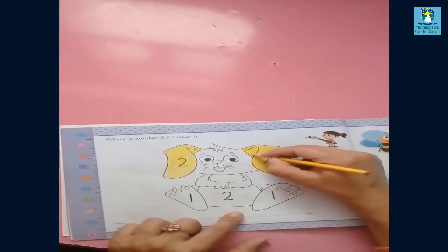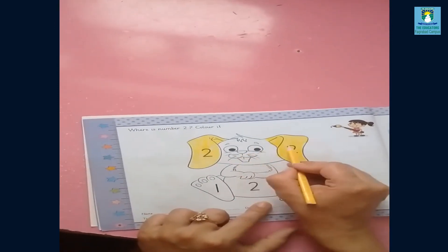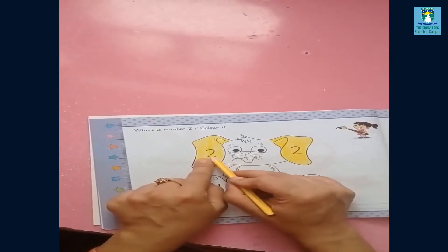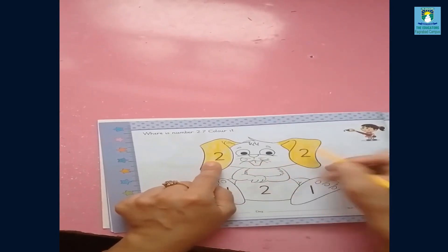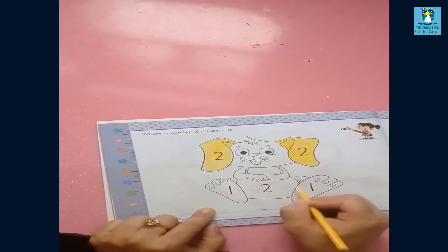This is your class work. Only color number two. Here's number two, and here is number two. The last number two is here.